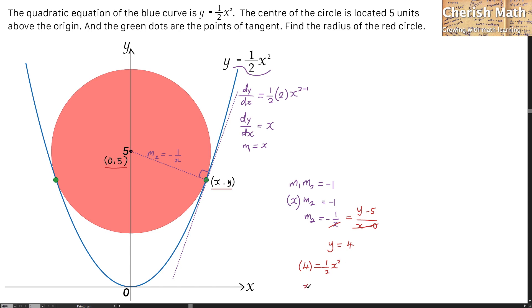So x squared is equal to 8, and the value of x is 2 square root of 2. For now, I have the answer for this coordinate (x, y). I'm going to jot it down here: 2 square root of 2 for the coordinate of x, and y is 4. So this is the solution for this coordinate of tangent.